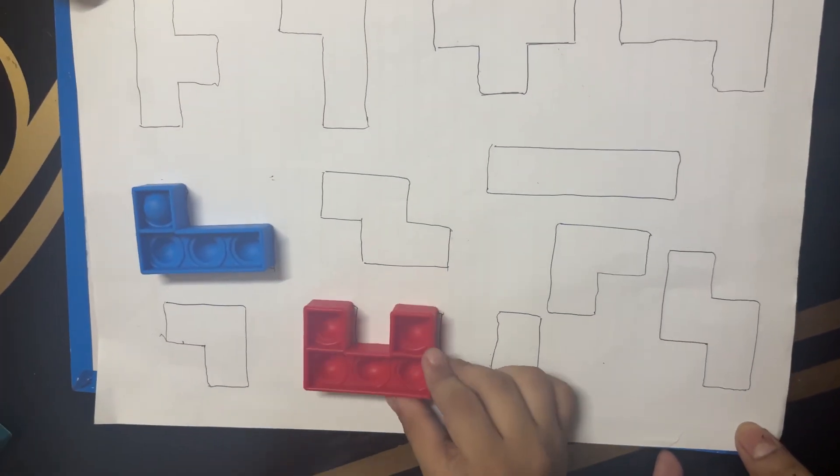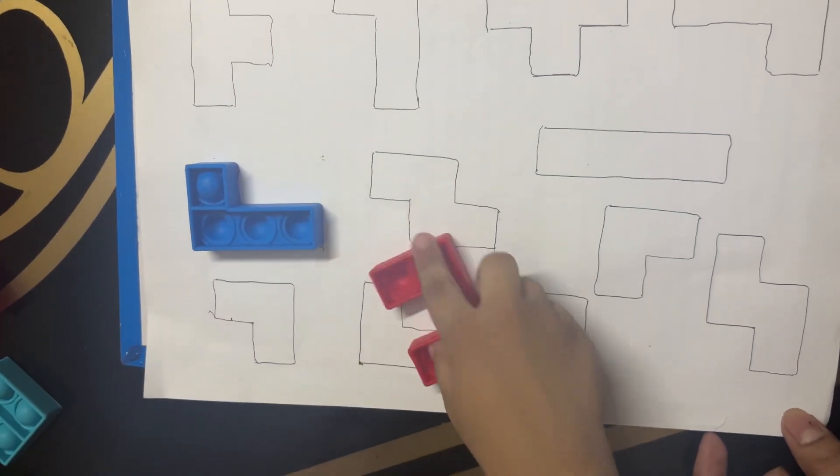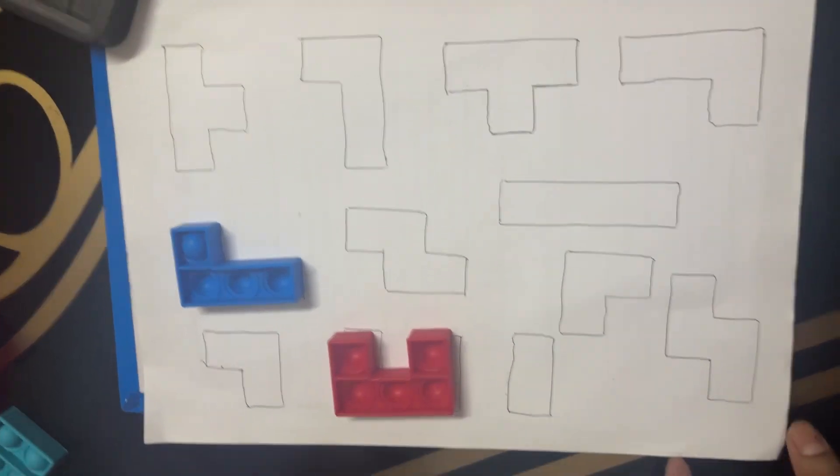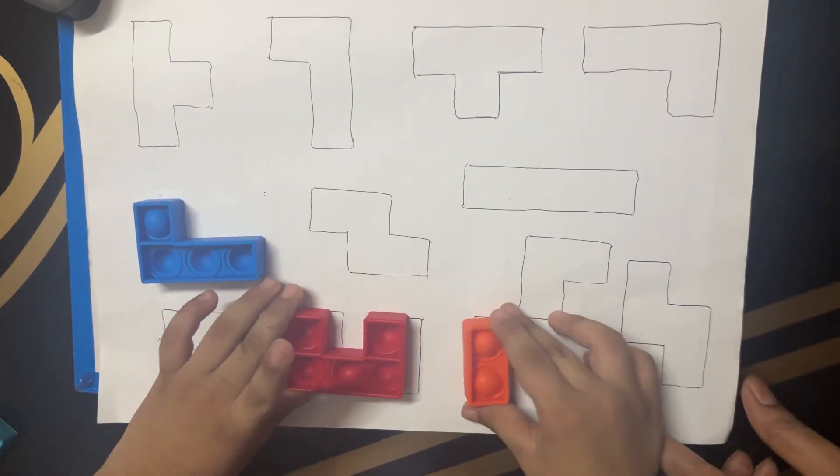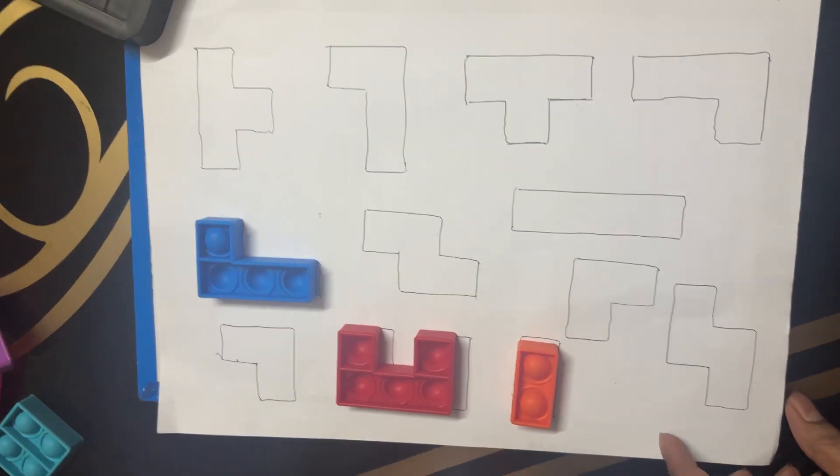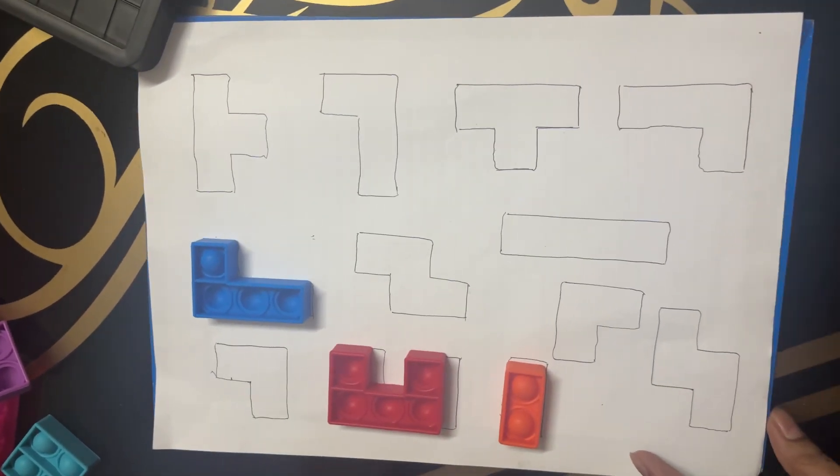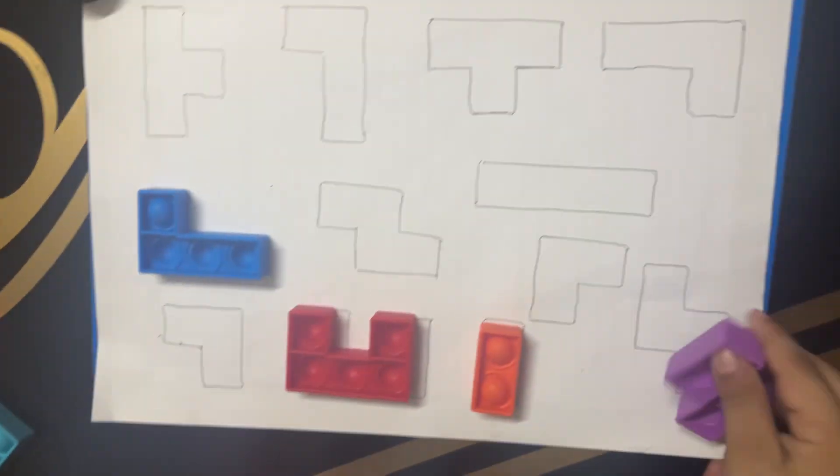You just draw the shapes on the paper and ask your child to match the shapes with the objects. It's good for hand and eye coordination and will keep your child busy. Also good for color recognition. You can also teach them colors.